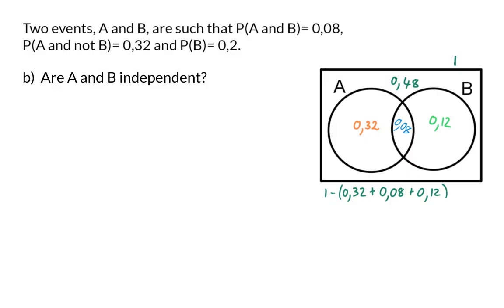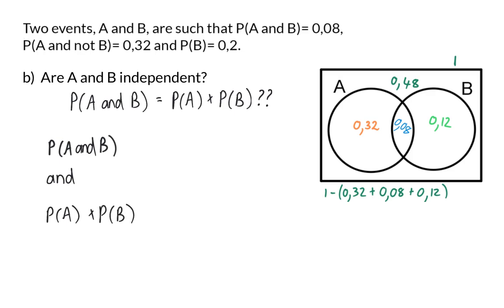Question B. Are A and B independent? I am reminding you that to check for independence, we need to determine whether the probability of A and B will be the same as the probability of A multiplied by the probability of B. The left-hand side, which is the probability of A and B, is given as 0.08. Now, we need to determine whether the probability of A multiplied by the probability of B will also be 0.08.